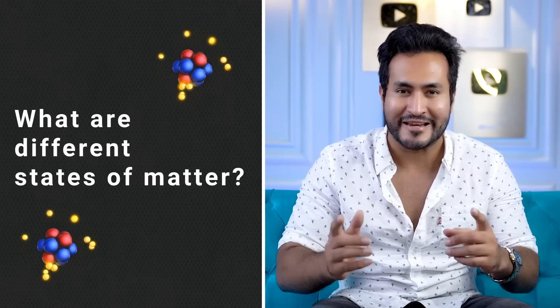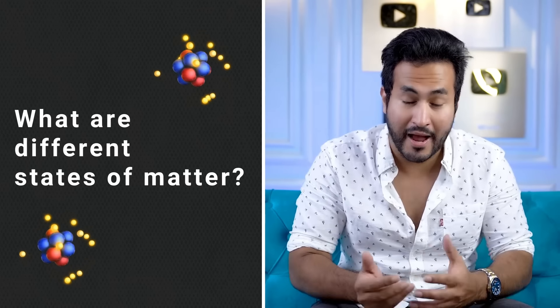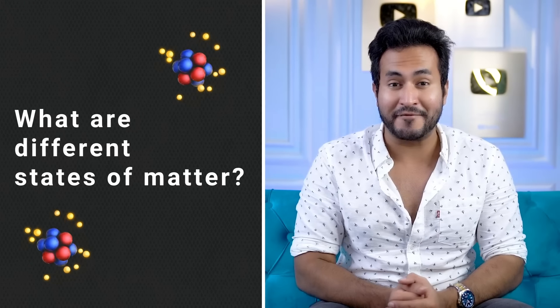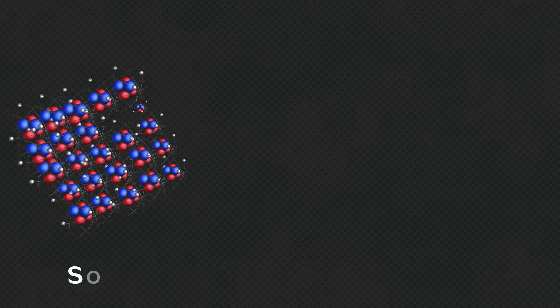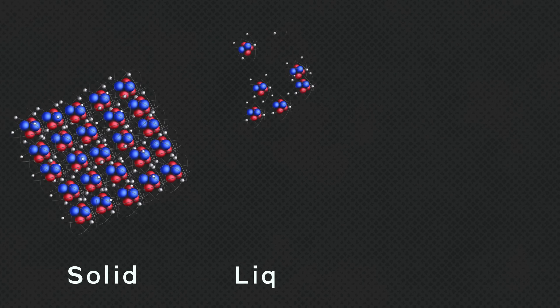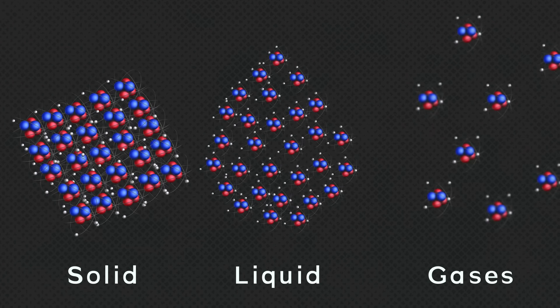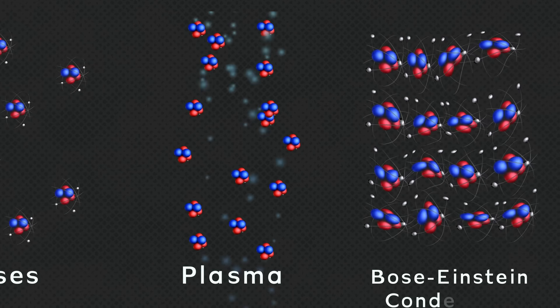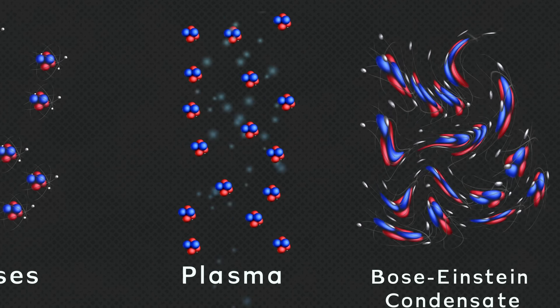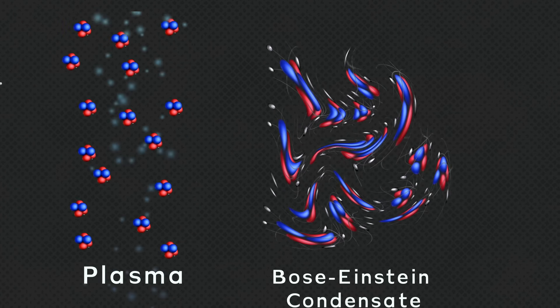Hello friends, I am Gaurav and I will tell you something about what are different states of matter. I know this question is quite simple but let's count them. Number 1: solid. Number 2: liquid. Number 3: gaseous. Number 4: plasma. Number 5: Bose-Einstein condensate.